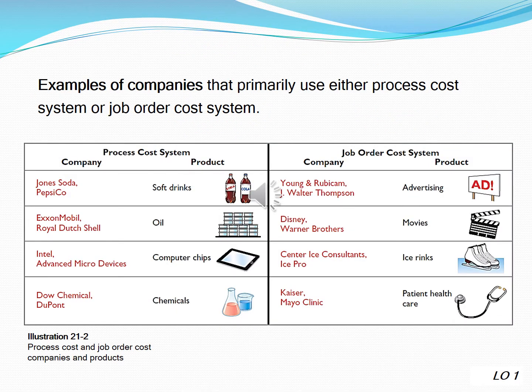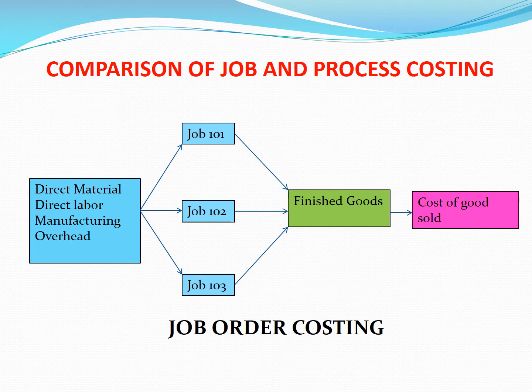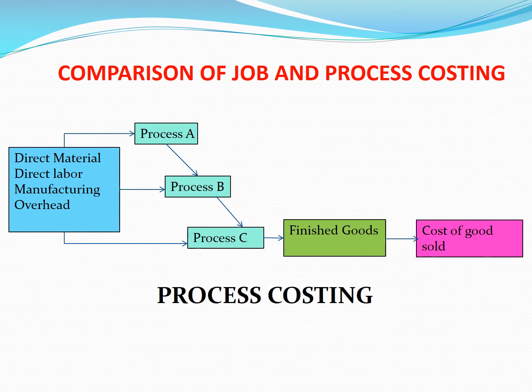Examples of companies that primarily use either a process cost system or a job order cost system are shown in Illustration 21, which lists process cost and job order cost companies and their products.